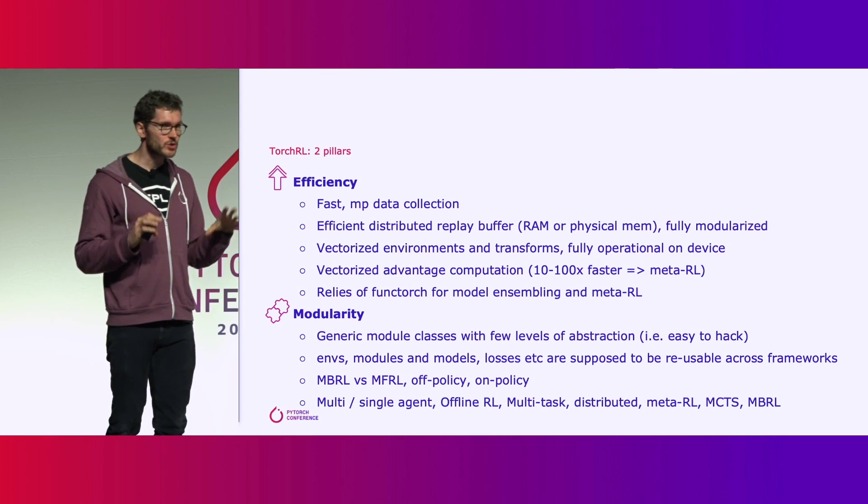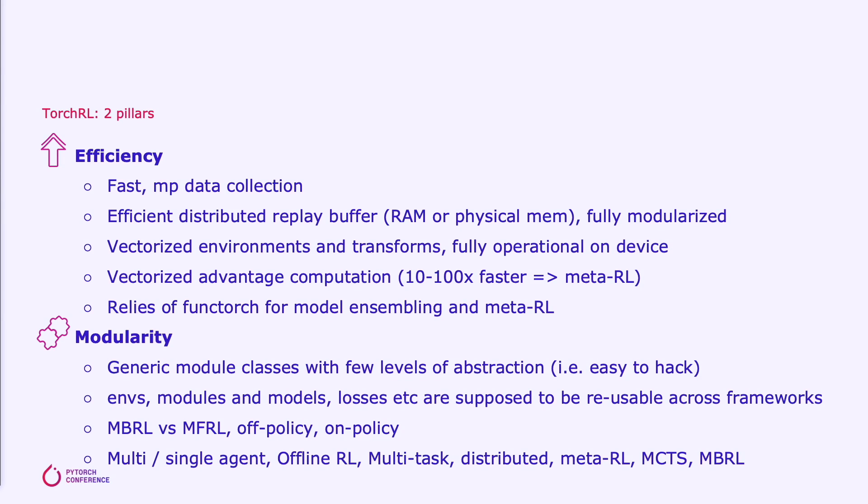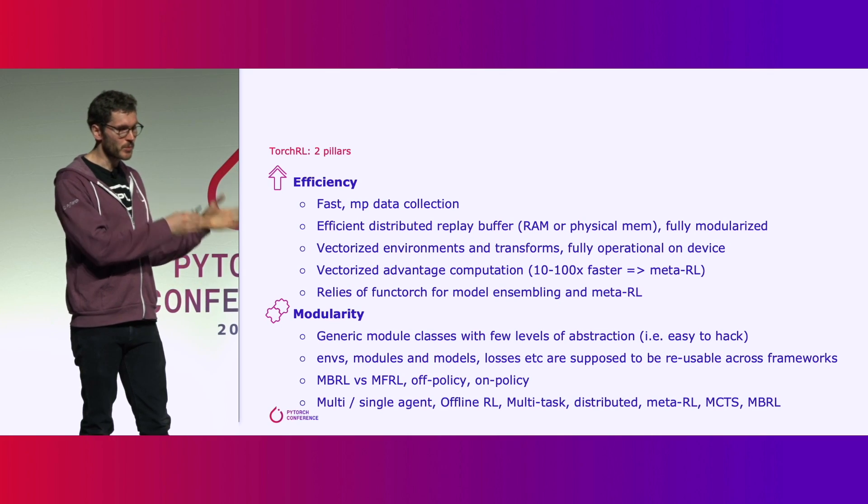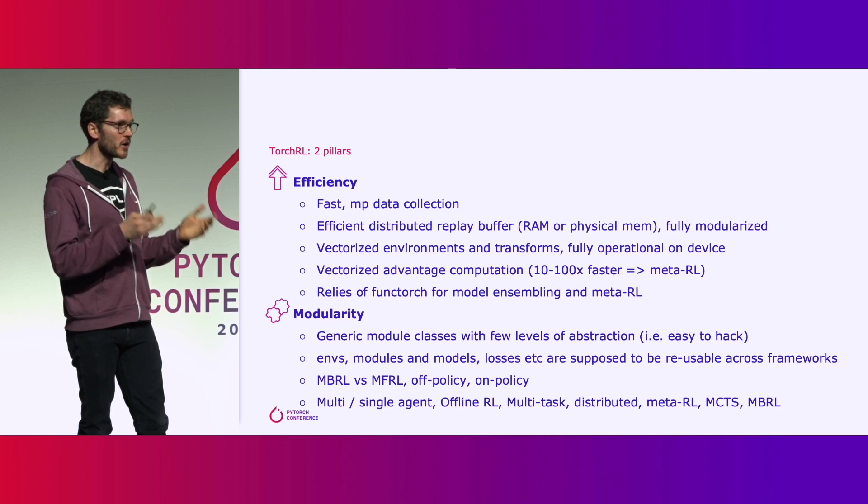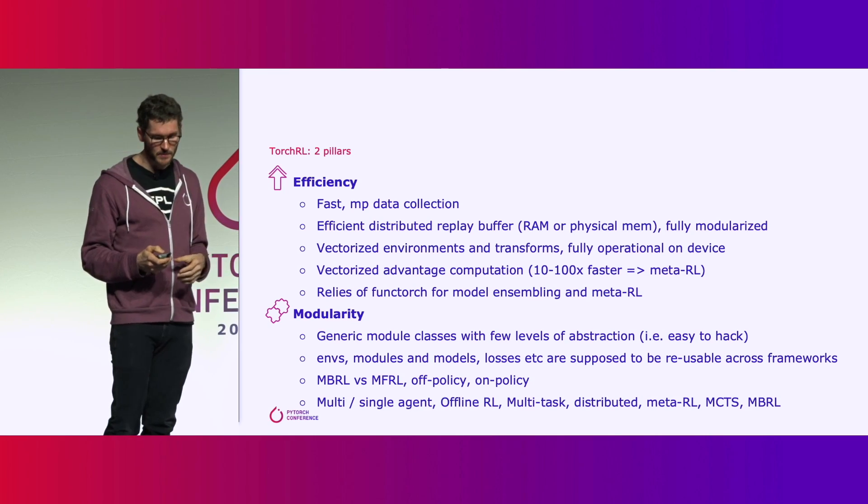We focused on two main pillars. The first is efficiency — aligned with everything discussed about PyTorch core, plus very specific RL modules such as an efficient replay buffer that can work in distributed settings, vectorized environment transforms, advantage computations, and similar features. The second pillar is modularity: generic model classes with very few levels of abstraction — environments, modules, models — components you can combine into a unified algorithm covering model-based to model-free RL, on-policy, off-policy, offline, and online settings.